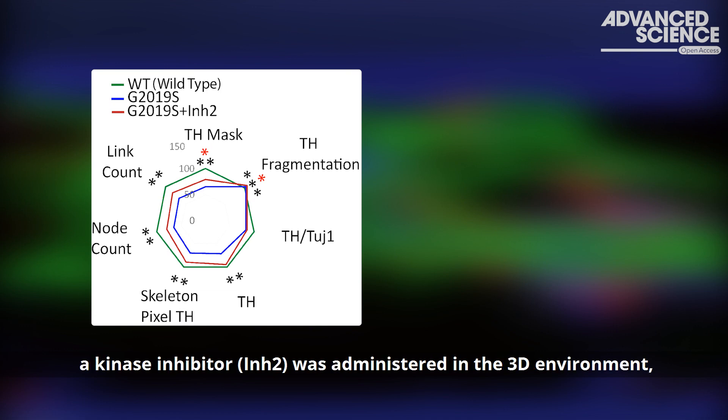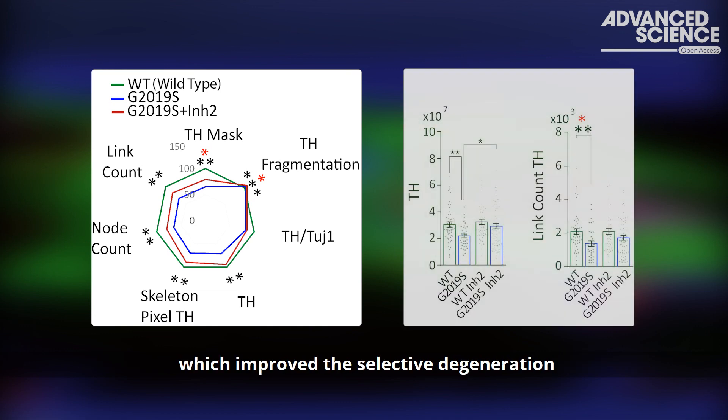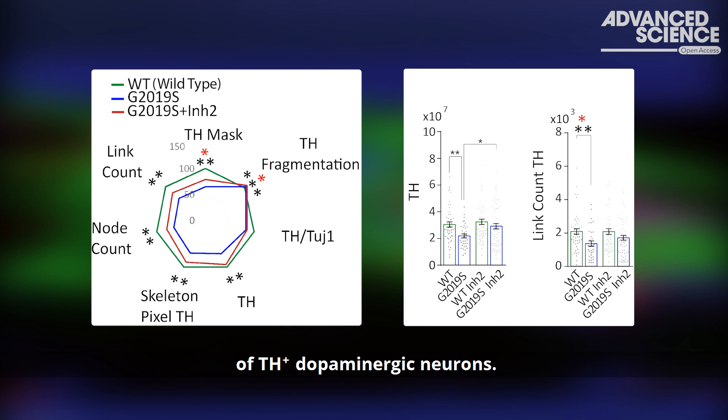a kinase inhibitor was administered in the 3D environment, which improved the selective degeneration of TH positive dopaminergic neurons.